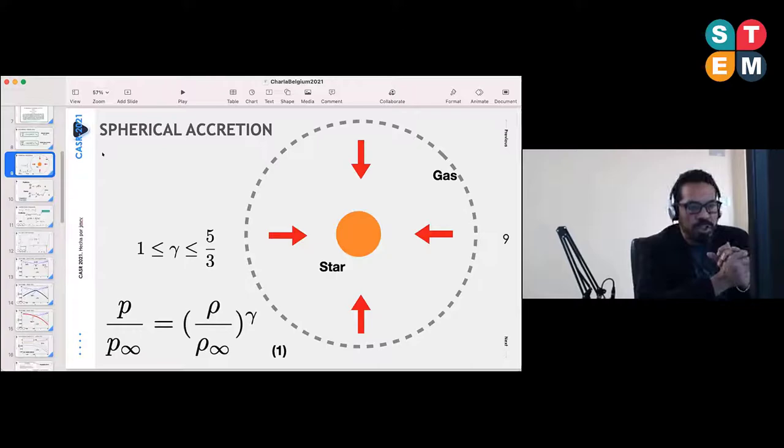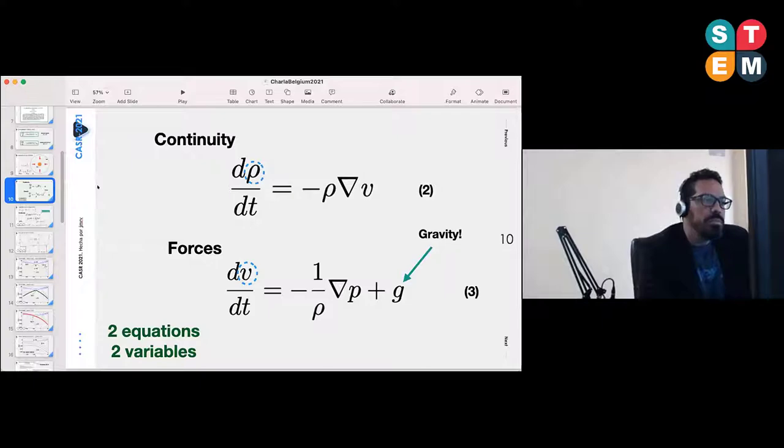This is the general configuration we are going to study. We have an object which is the promoter of the accretion and geometrically distributed spherical gas around it. Very far away from it, there's going to be some density and pressure which are related through this proportionality relation here with this polytropic index going from one to five-thirds in this study.